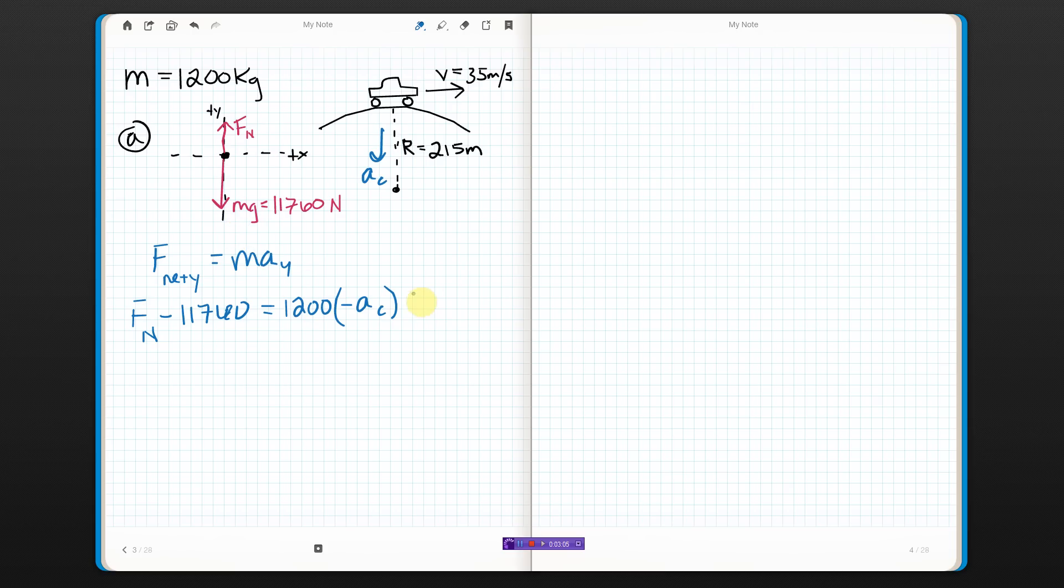a_c is v squared over r, and don't forget the negative there. That negative is outside the square, by the way. So when you square v, the negative will be outside. We're going to get a negative answer here.